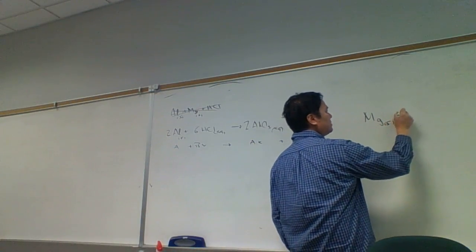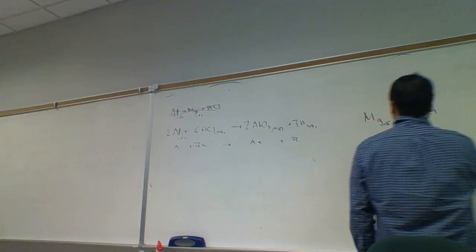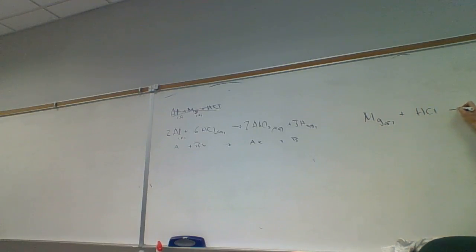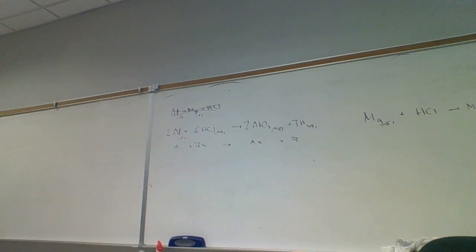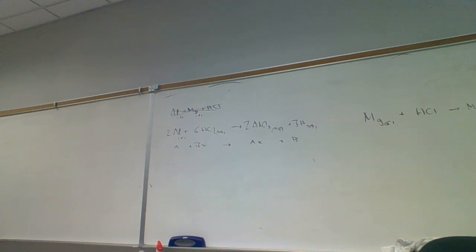That's going to be magnesium solid plus HCl. This is A plus BX yields AX. So magnesium with chlorine or chloride. What's the formula for magnesium chloride? MgCl2 plus hydrogen. Atomic hydrogen is not stable. We like to form diatomic hydrogen, which is stable.